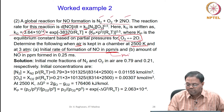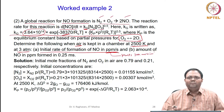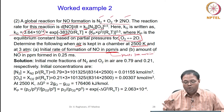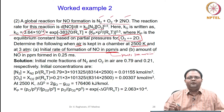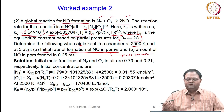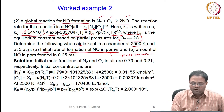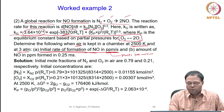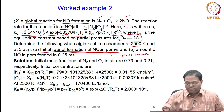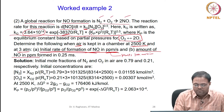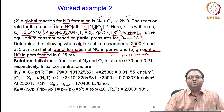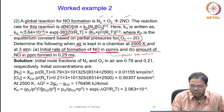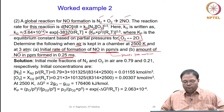ppm stands for parts per million — it is the mole fraction multiplied by 10⁶. The second part of the question asks for the amount of NO in ppm formed at a time instant of 0.25 milliseconds.